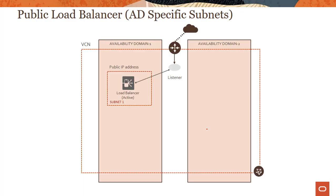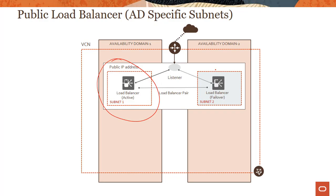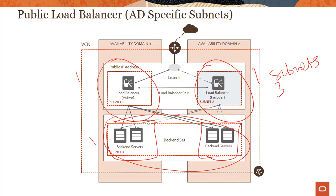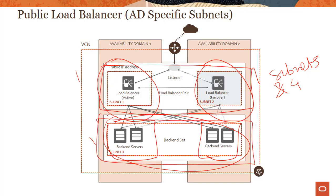Alternatively, you can use AD-specific subnets. The only difference is the load balancer runs in a subnet specific to AD1, and the failover instance runs in a separate subnet specific to AD2, while backends are in a regional subnet — giving a total of three subnets. If the backends were also in AD-specific subnets, you'd have four subnets instead of three. With regional subnets you only need two. For a public load balancer, we recommend using a regional subnet.